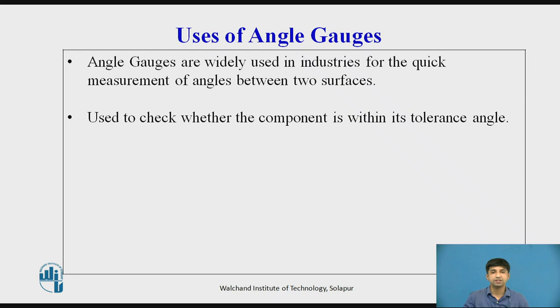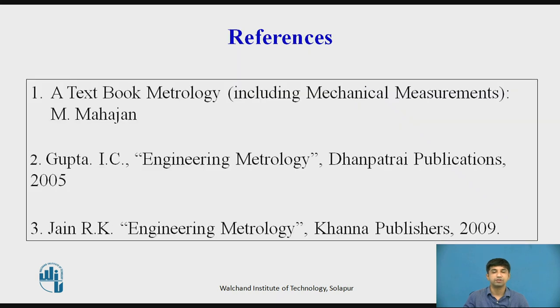Uses of angle gauges. Angle gauges are widely used in industries for the quick measurement of angles between two surfaces. Second, it is used to check whether the component is within its tolerance angle or not.